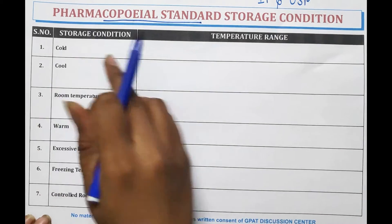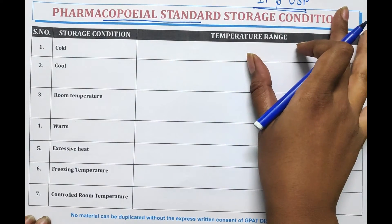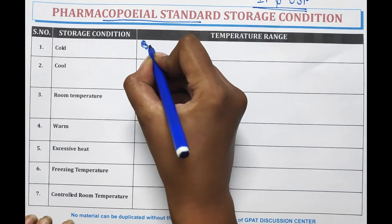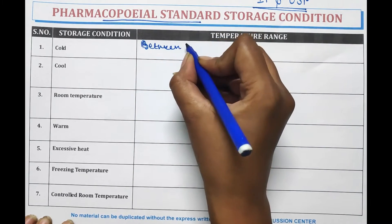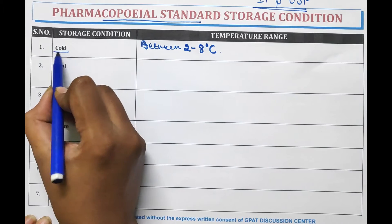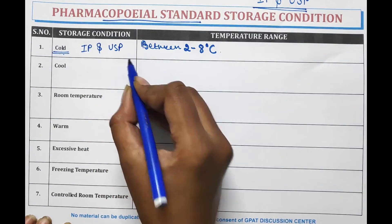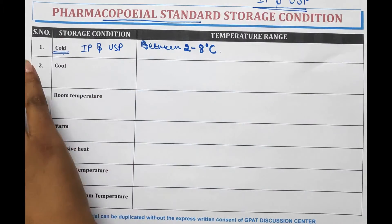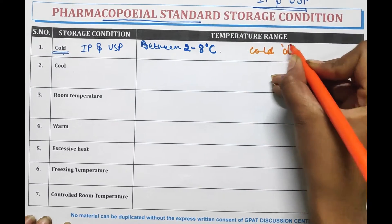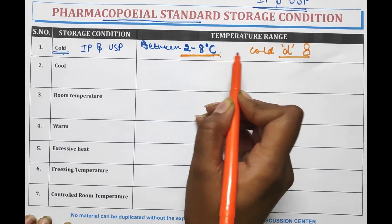We will discuss the temperature ranges issued by Indian Pharmacopoeia and USP. Cold temperature means that a pharmaceutical product should be stored between 2 to 8 degrees Celsius. This storage condition has been defined by both Indian Pharmacopoeia and USP with the same limit of 2 to 8 degrees Celsius. You can remember this: 'Cold' ends in D, and D similarly looks like 8.